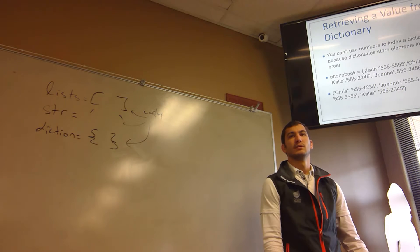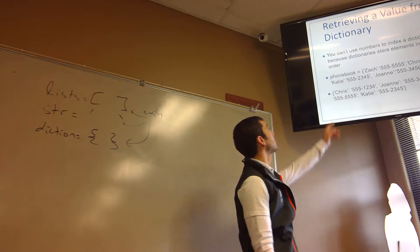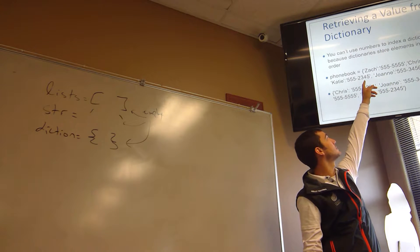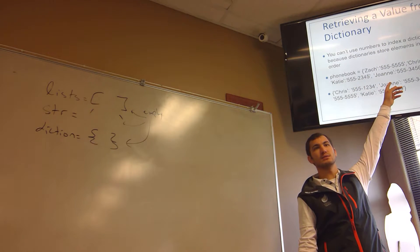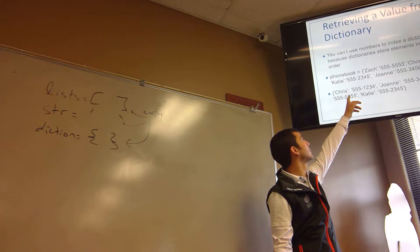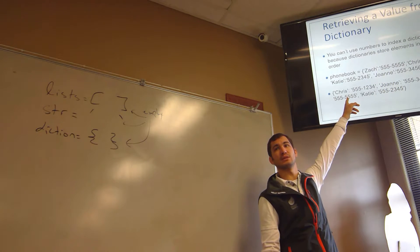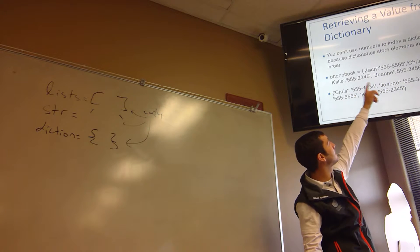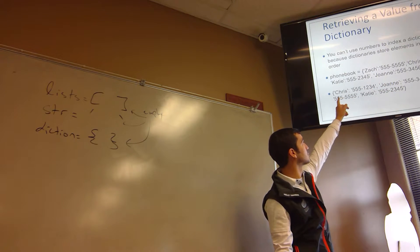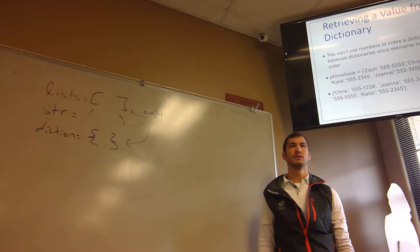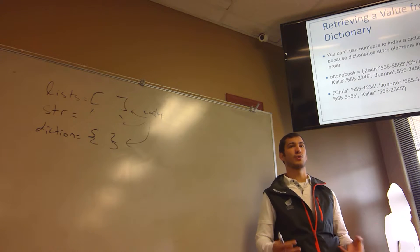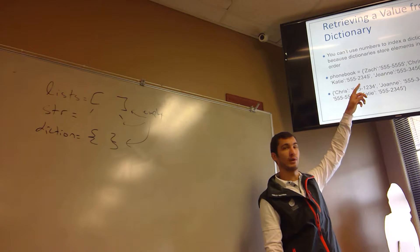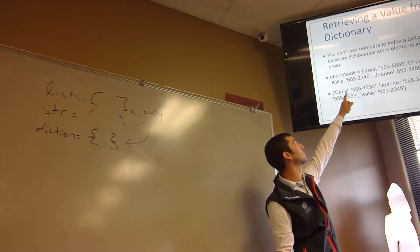So for phonebook, this dictionary, I built it so I wrote it exactly like this, and when I displayed it this is what came up. When I first did this PowerPoint, even though I have Zack, Chris, and then Katie and Joanne, it got printed as Chris, Joanne, Zack, Katie. So it's stored in a random order. I don't know the rhyme or reason to it.